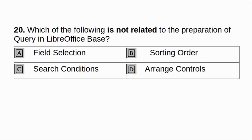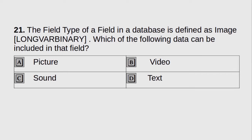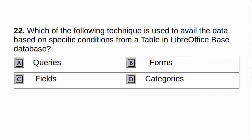Which of the following is not related to the preparation of query in LibreOffice Base? A. Field selection. B. Sorting order. C. Search conditions. D. Arrange controls. Answer: D. Arrange controls. The field type of a field in a database is defined as Image Long Binary. Which of the following data can be included in that field? A. Picture. B. Video. C. Sound. D. Text. Answer: A. Picture. Which of the following technique is used to avail the data based on specific conditions from a table in LibreOffice Base database? A. Queries. B. Forms. C. Fields. D. Categories. Answer: A. Queries.